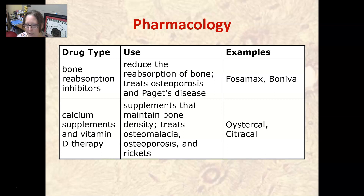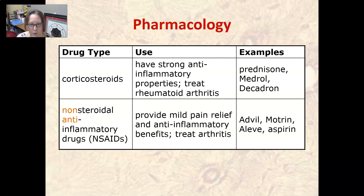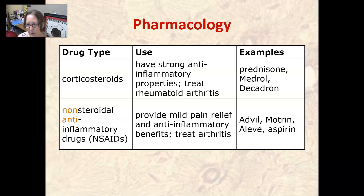OsteoCal and Citracal are two examples of calcium supplements. Corticosteroids have strong anti-inflammatory properties and are used to treat rheumatoid arthritis and other autoimmune conditions; examples include prednisone, Medrol, and Decadron.